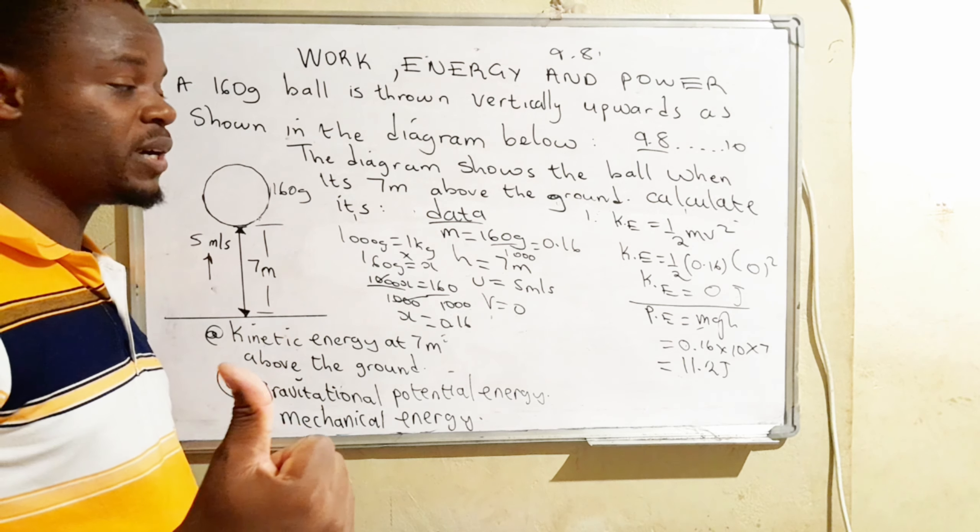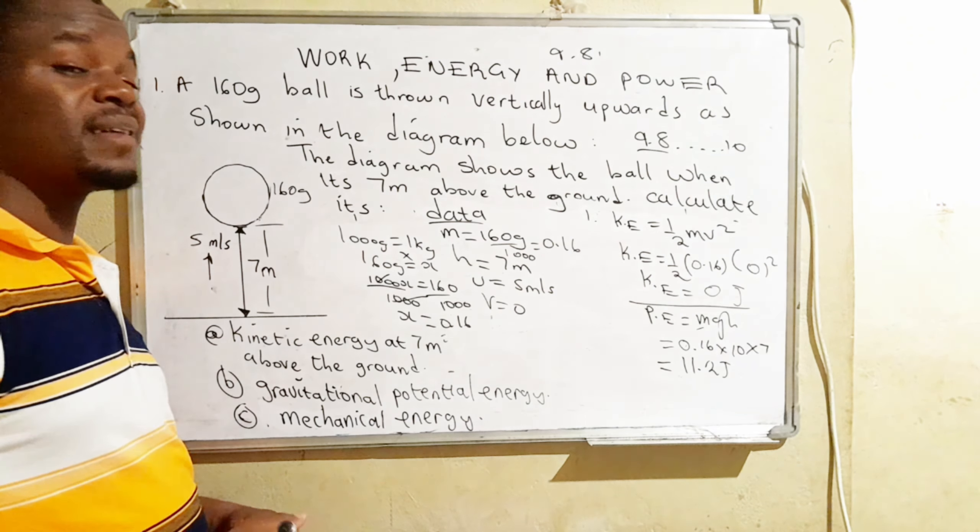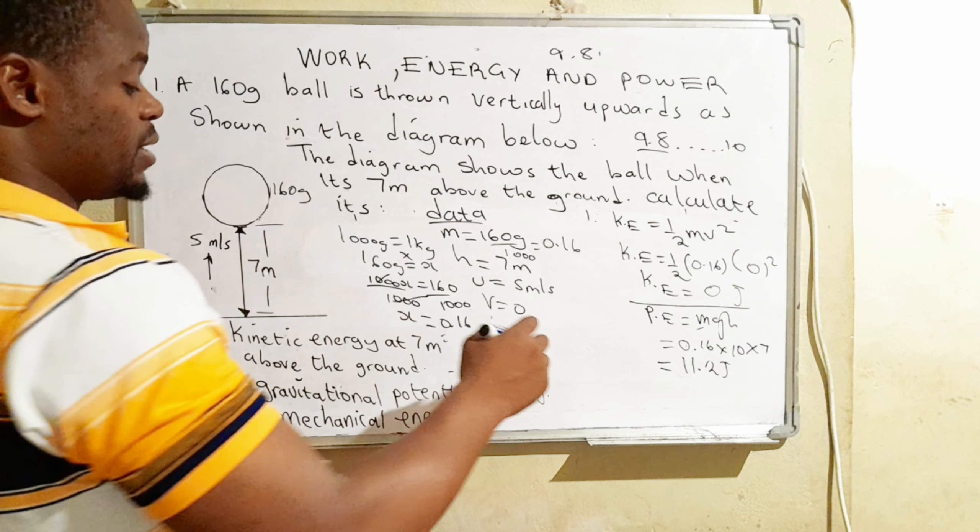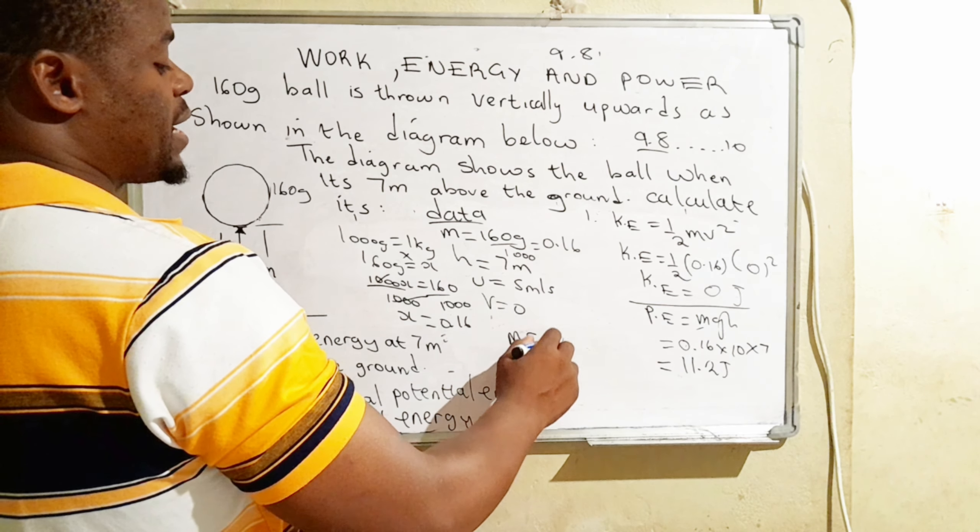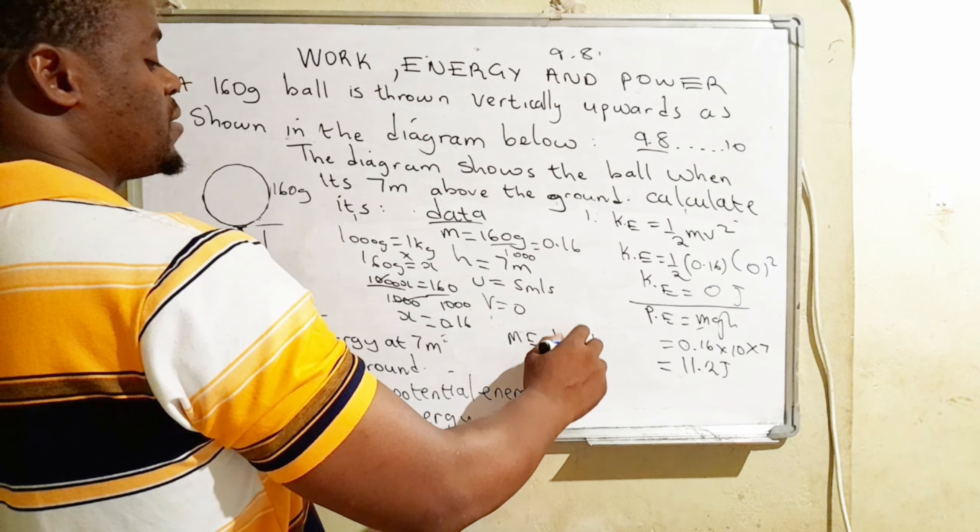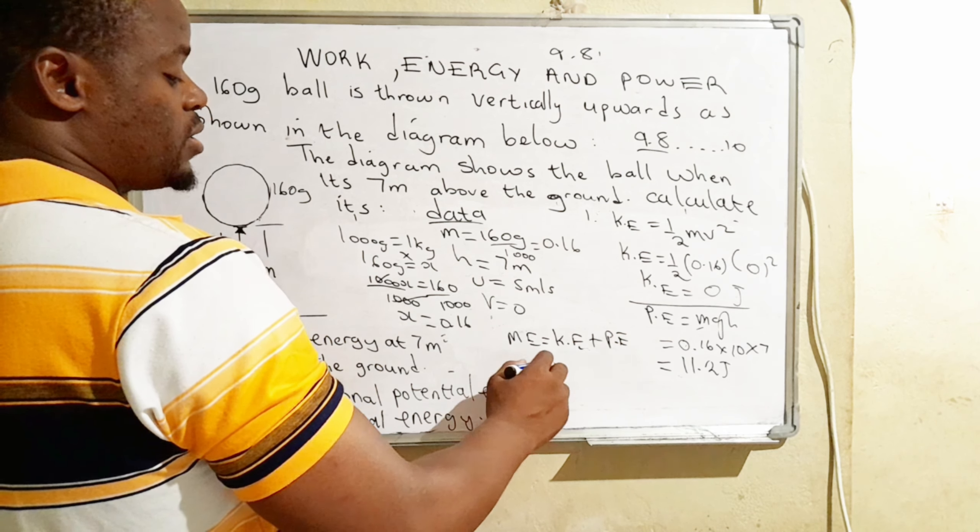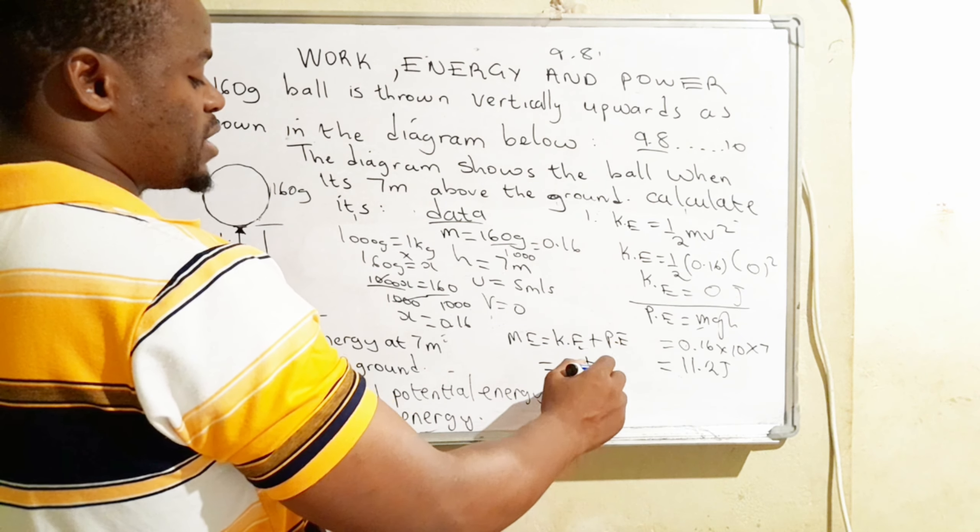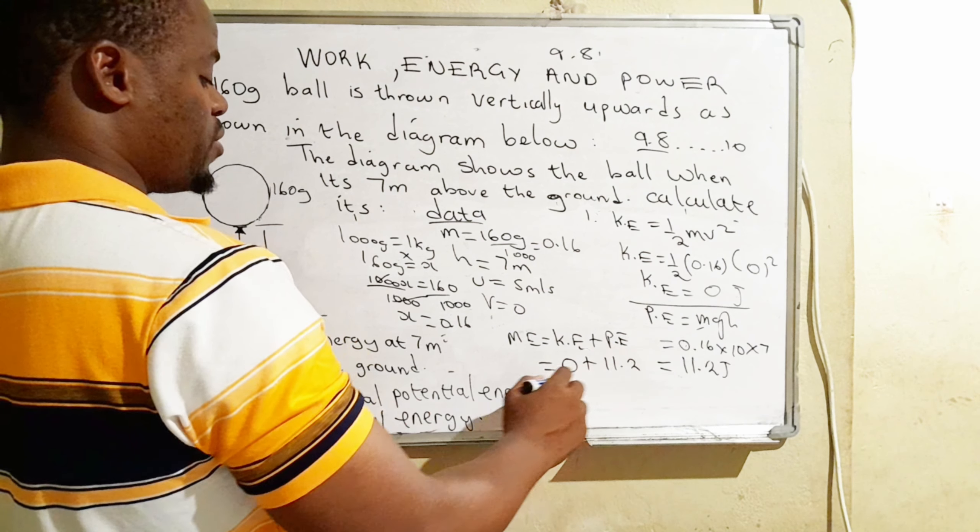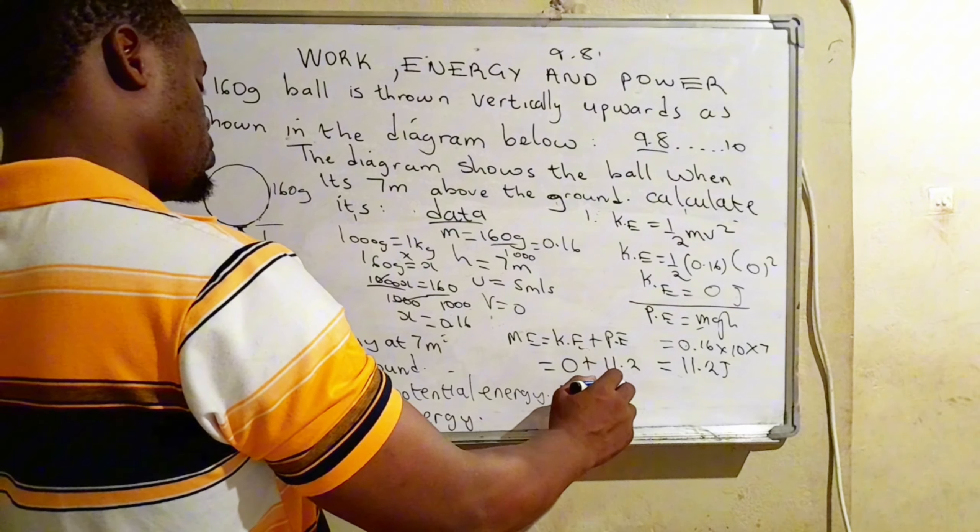So since we are still talking about energy, you have to record it in joules. So we found the potential energy, the gravitational potential energy, and the kinetic energy. What then is mechanical energy? So mechanical energy is actually given by kinetic energy plus gravitational potential energy. So we now have kinetic energy which is zero, plus gravitational potential energy which is 11.2. And the answer will be 11.2 joules.